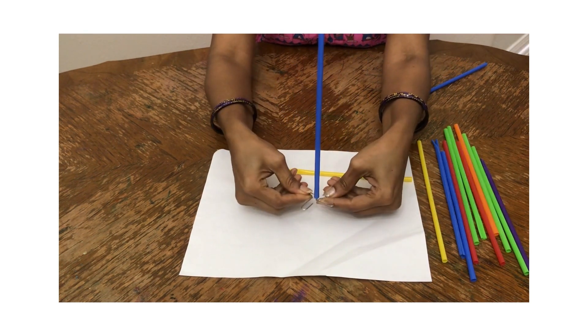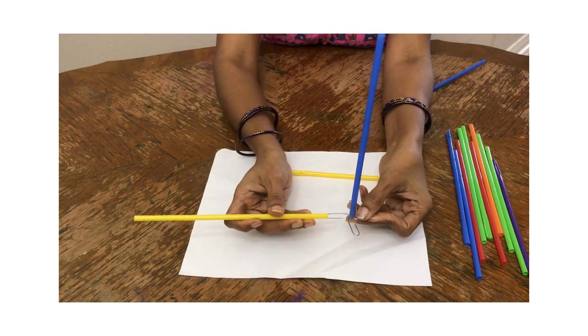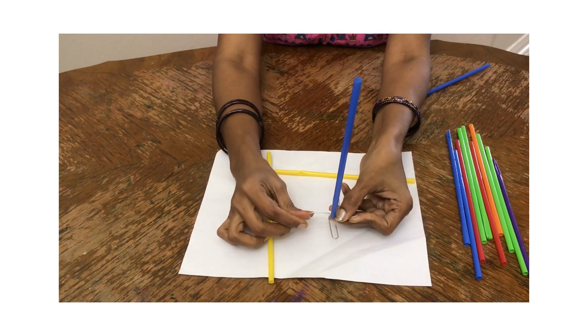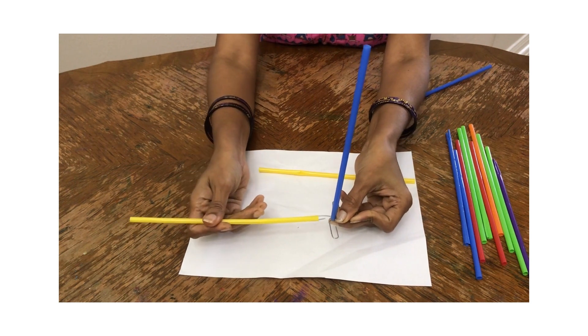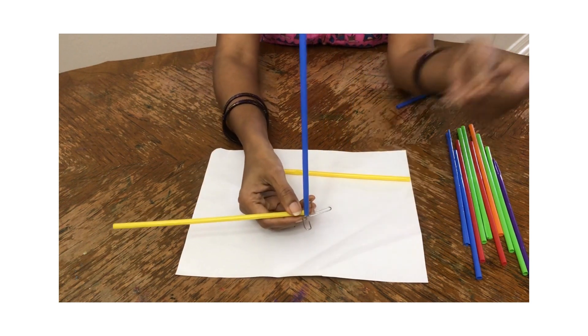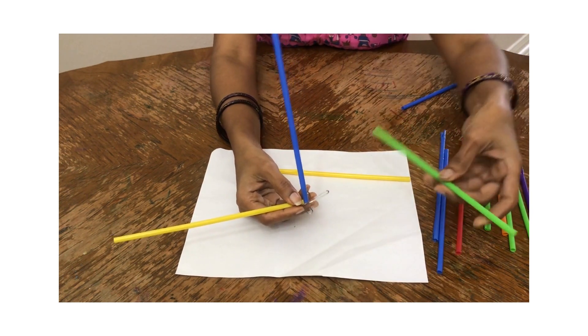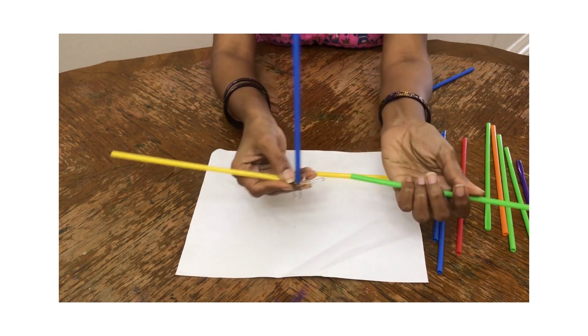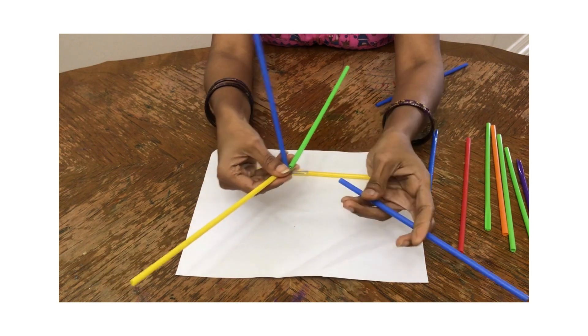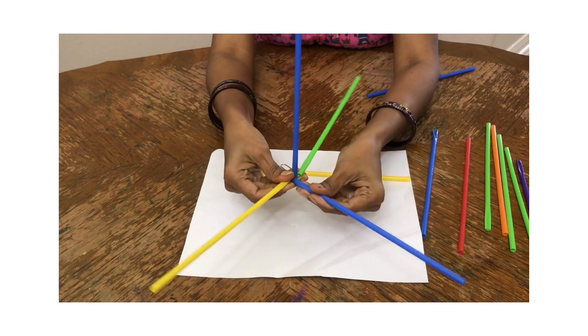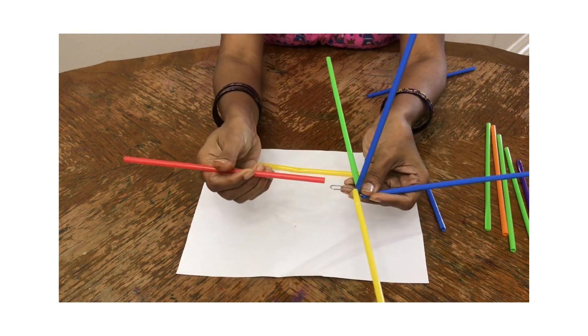To make this stronger, we will take 4 more straws and make this bigger side. Pinch it and put the straw like that, on the 4 sides. Pinch it. Put it. Pinch. Put it. Pinch. Another one. This is the last one. Pinch and put it.